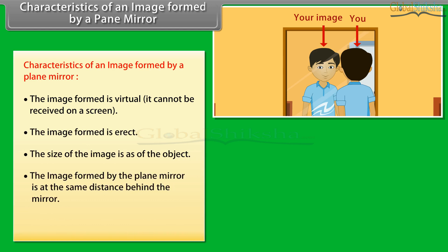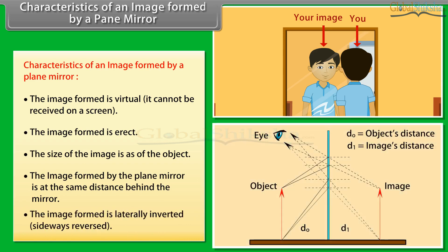The image formed by the plane mirror is at the same distance behind the mirror. The image formed is laterally inverted, sideways reversed.